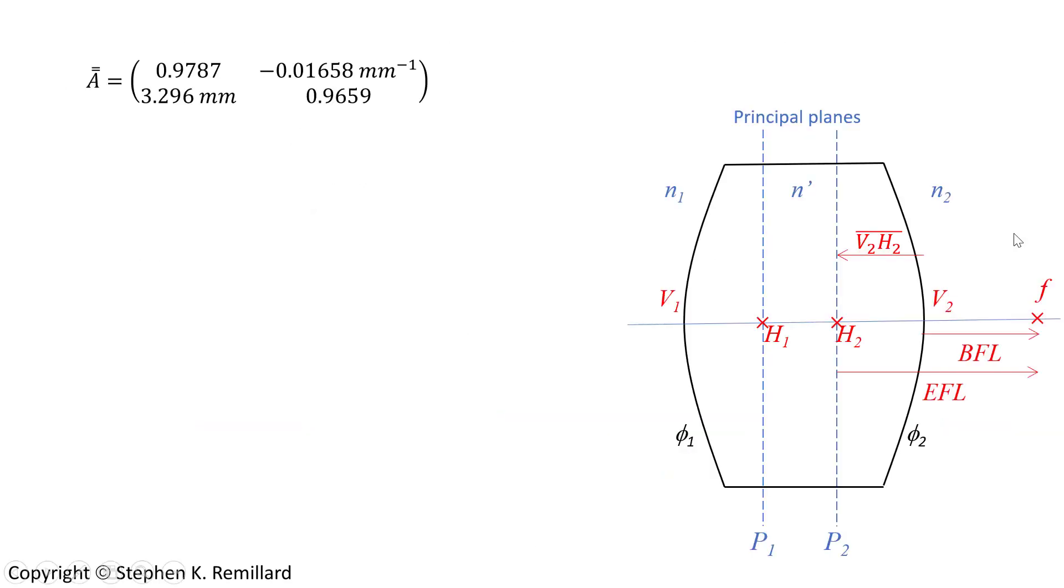So now let's find the points in this lens. We have the principal planes, H1 and H2. You have the back focal length, the effective focal length. Let's locate all of these things from this system matrix. The effective focal length is just 1 divided by minus element A12, and so we know right away the effective focal length of this lens is 60.31 millimeters.